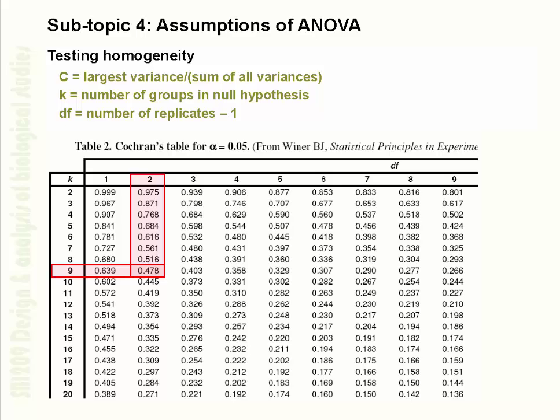This slide shows the Cochran's table. K here is the number of treatments, which is nine, because we have three treatments in three habitats giving nine treatment combinations in total. The degrees of freedom across the top is two, because there are three replicates minus one, giving two degrees of freedom — hence the table value of 0.478.